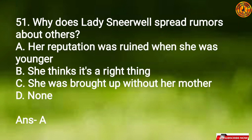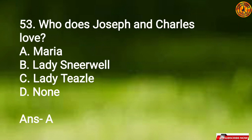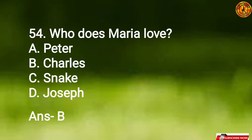Question 51: Why does Lady Sneerwell spread rumors about others? Option A, her reputation was ruined when she was younger — she was a victim and she is taking revenge. Question 52: Who does Lady Sneerwell love? Option A, Charles. Question 53: Who do Joseph and Charles love? Joseph loves Option A, Maria; Charles loves Option B, Maria. Question 54: Who does Maria love? Option B, Charles.